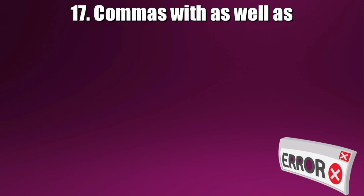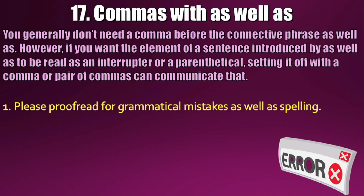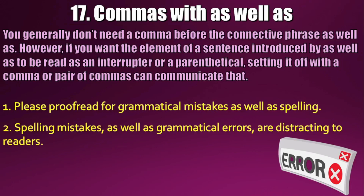The seventeenth use: commas with 'as well as.' You generally don't need a comma before the connective phrase 'as well as.' For example: 'Please proofread for grammatical mistakes as well as spelling.' However, if the element introduced by 'as well as' is meant to be read as a parenthetical or interrupter, set it off with commas. Example: 'Spelling mistakes, as well as grammatical errors, are distracting to readers.' Here, 'as well as grammatical errors' is set off with two commas.